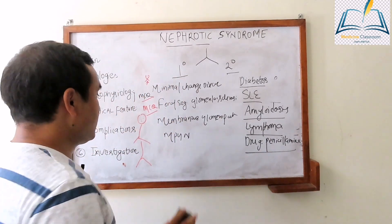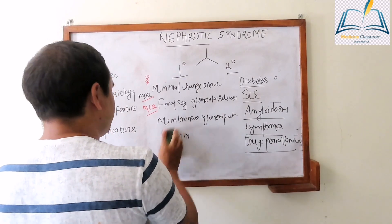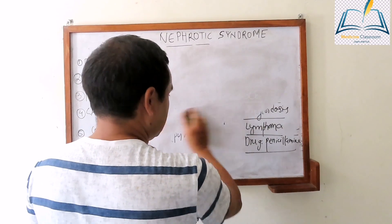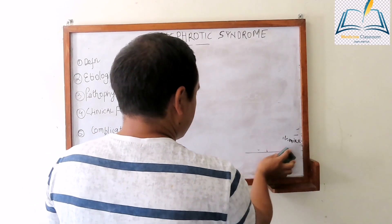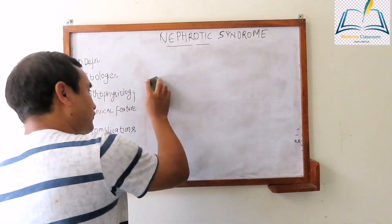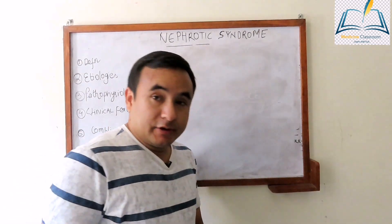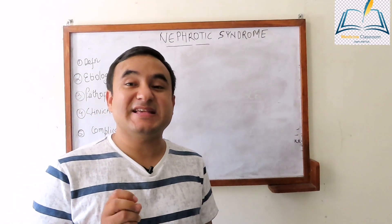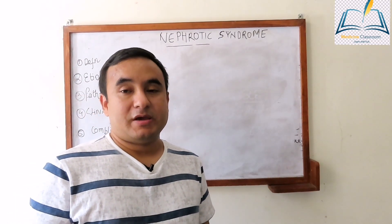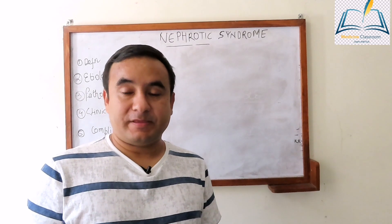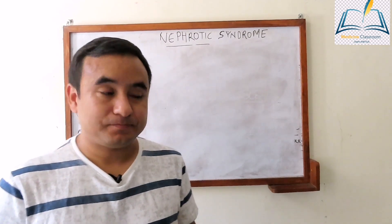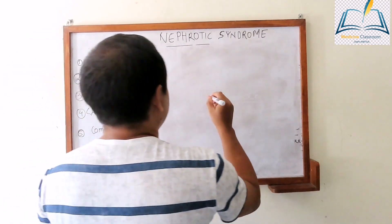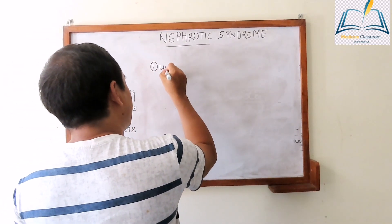After knowing the etiology of nephrotic syndrome, we will go to the pathophysiology. The problem in nephrotic syndrome is that there is leakage of albumin in the urine — gross albuminuria. As a result, there are two hypotheses: the underfill hypothesis and the overfill hypothesis.